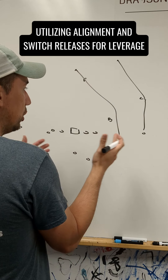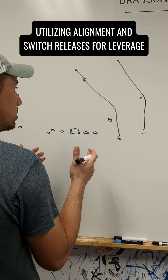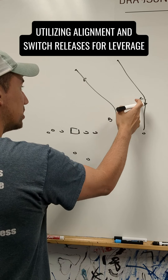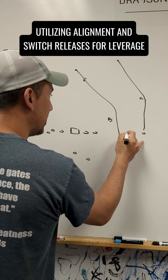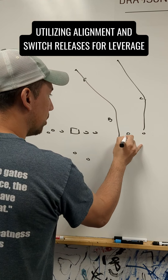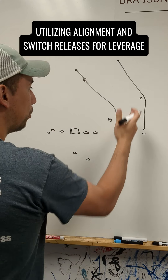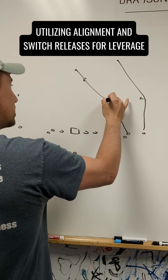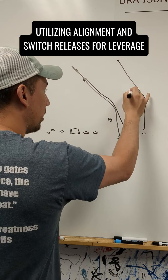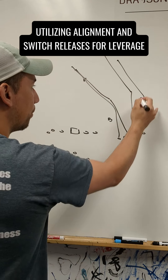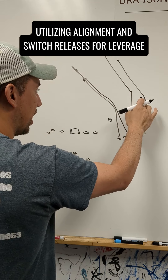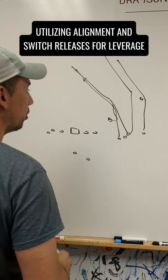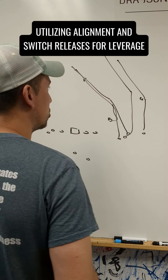What could you do utilizing a stacked release or a switch release from a condensed set to solve that problem? What we want is to get inside leverage on this corner. If I take these two receivers and put them very close here, I'm probably not going to get an inside alignment from the corner anymore. Now this guy runs wide and then runs the post — I'm probably going to get better leverage on that corner, and also get a free release if anyone was trying to collision the vertical in a three-match or catch scenario.